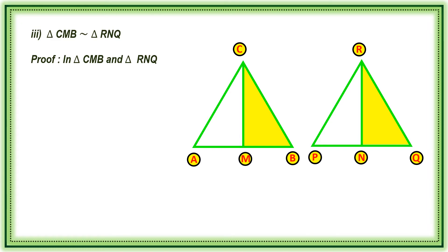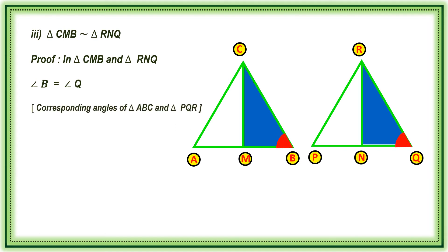angle B is equal to angle Q, corresponding angles of triangle ABC and triangle PQR. Also, BC by RQ is equal to BM by QN.